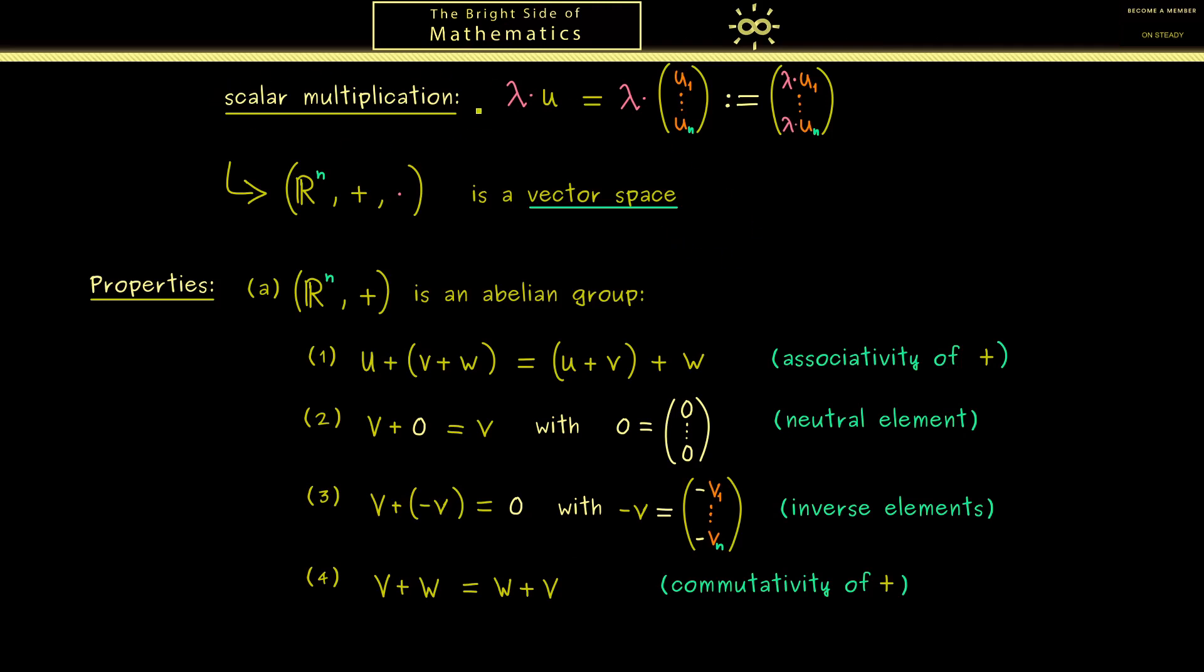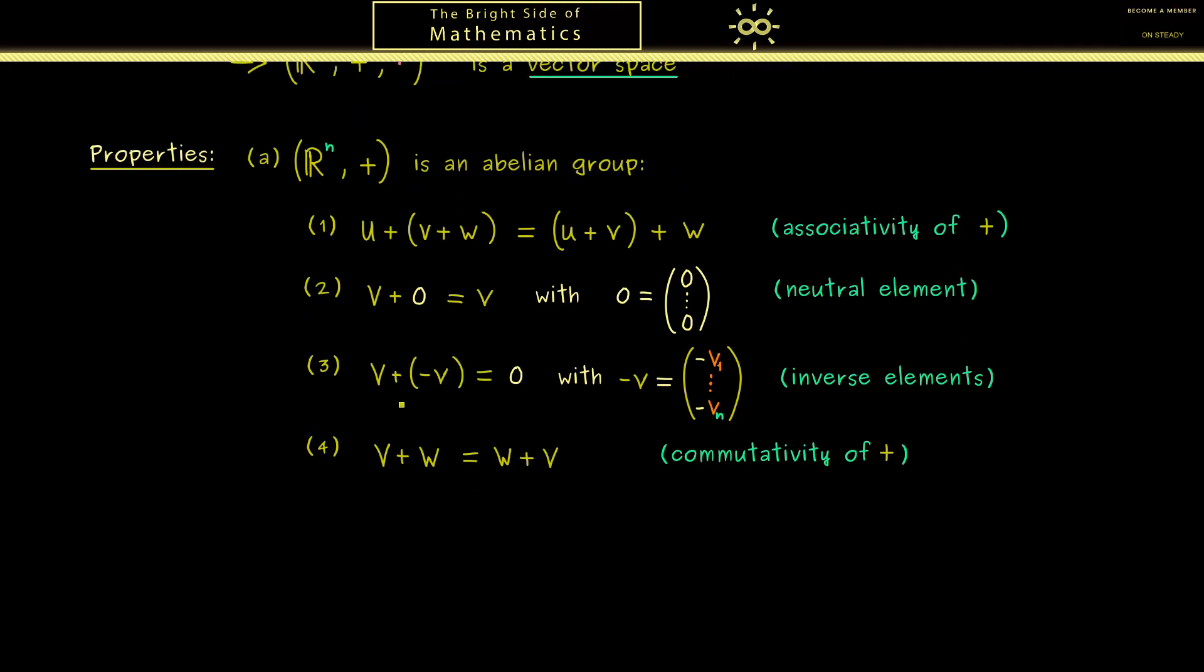And then the second part should be given by the scalar multiplication. Here I want to summarize two properties by saying that the scalar multiplication is compatible. Here, please recall the scalar multiplication is a little bit special because it's a map from R times R^n into R^n again. So it's different from the addition that gets two vectors as an input. Here we don't have this symmetry.